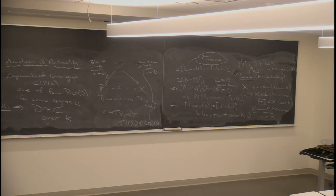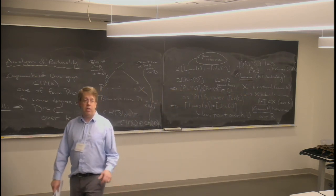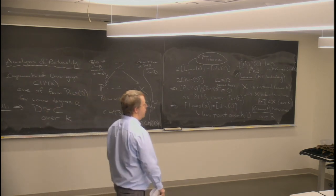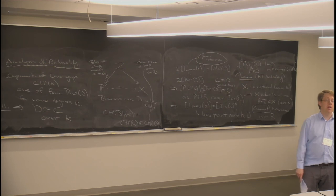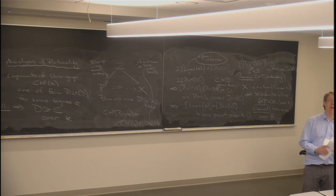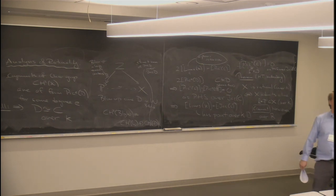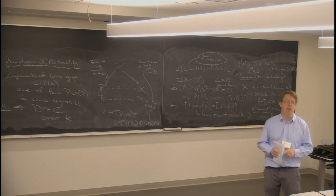Regarding how Kuznetsov's approach connects to this: he gets a twisted version of the curve using homological projective duality. His assertion is that the derived category of the geometrically rational Fano threefold is equivalent to the twisted derived category over a certain associated curve, where the twisting is an element of the Brauer group. Then you look at whether that element of the Brauer group is trivial over the ground field. There's a connection between the Brauer group and principal homogeneous spaces that is sometimes subtle.